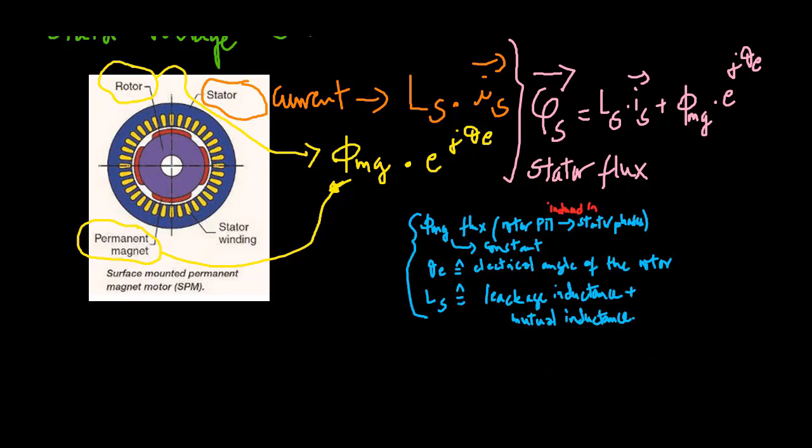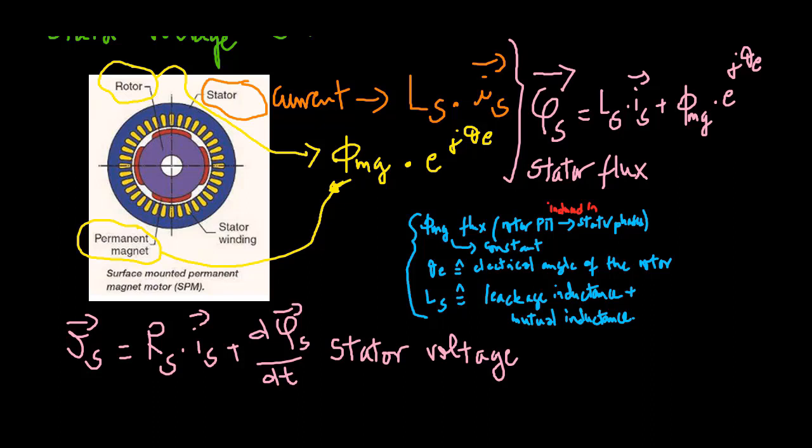With the space vector representation of voltage, current and flux, the stator voltage equation in space vector form can be written according to voltage law, where the vector V_s is the space vector of stator voltage, R_s times the vector I_s is the voltage drop on the resistors of the stator, and the vector dφ_s/dt is the induced voltage due to changing of magnetic flux.